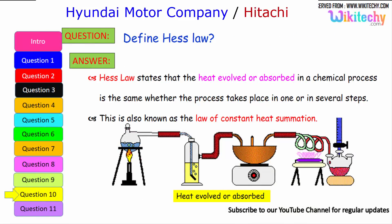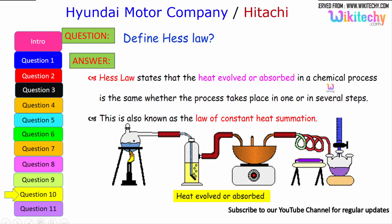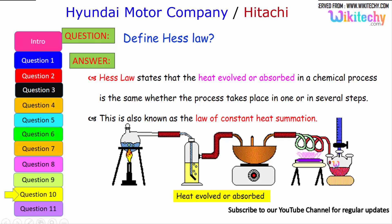This is one of the very important questions regarding heat generation between objects and emissions. This law states that the heat evolved or absorbed in a chemical process is the same whether the process takes place in one step or in several steps. This is also known as the law of constant heat summation — which is Hess's Law.